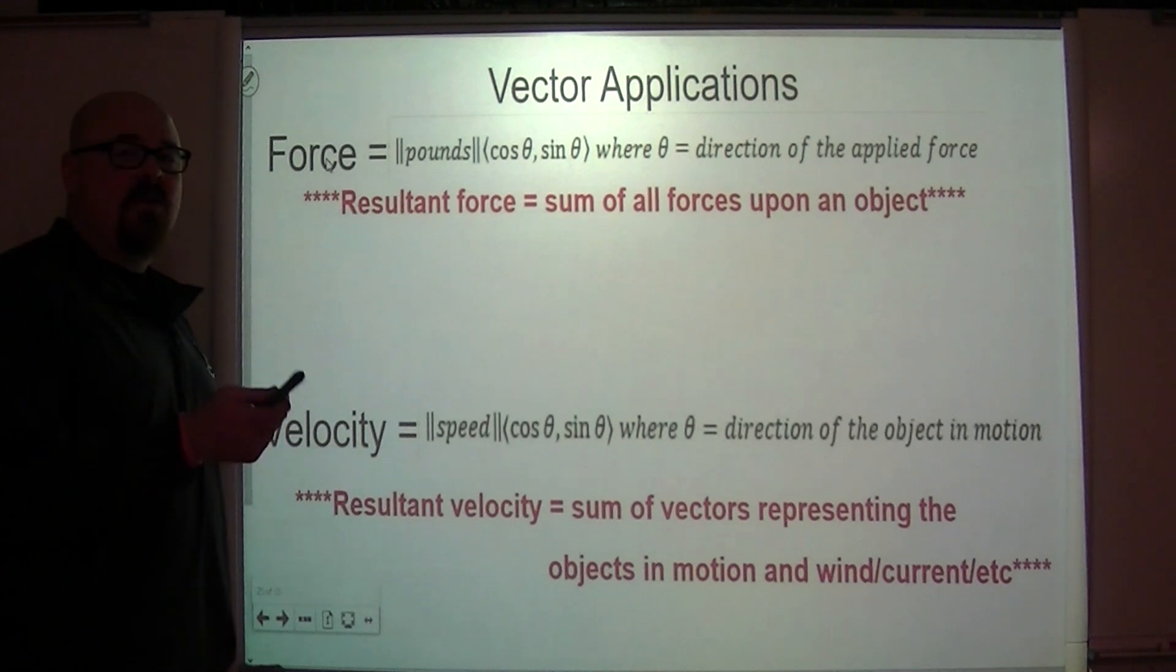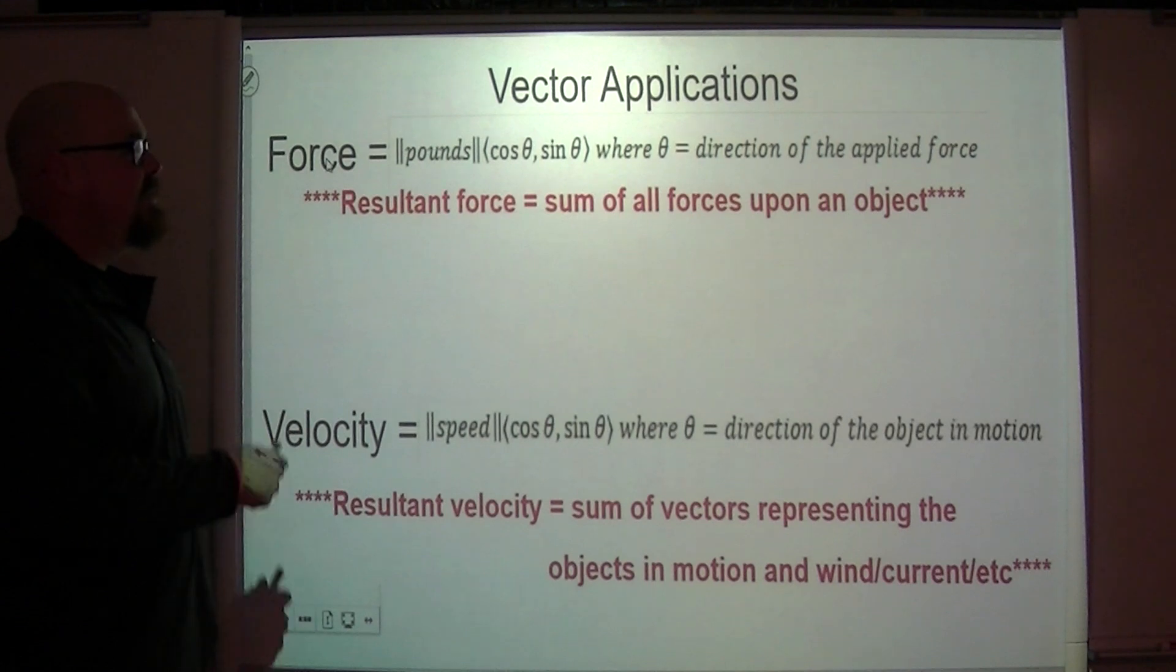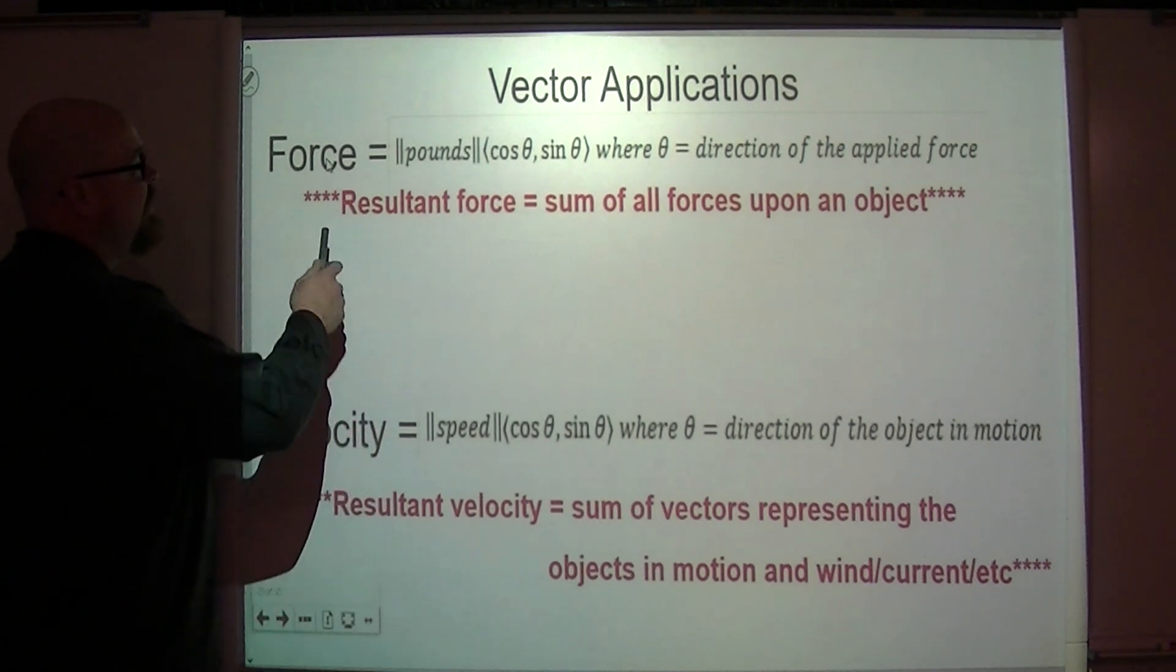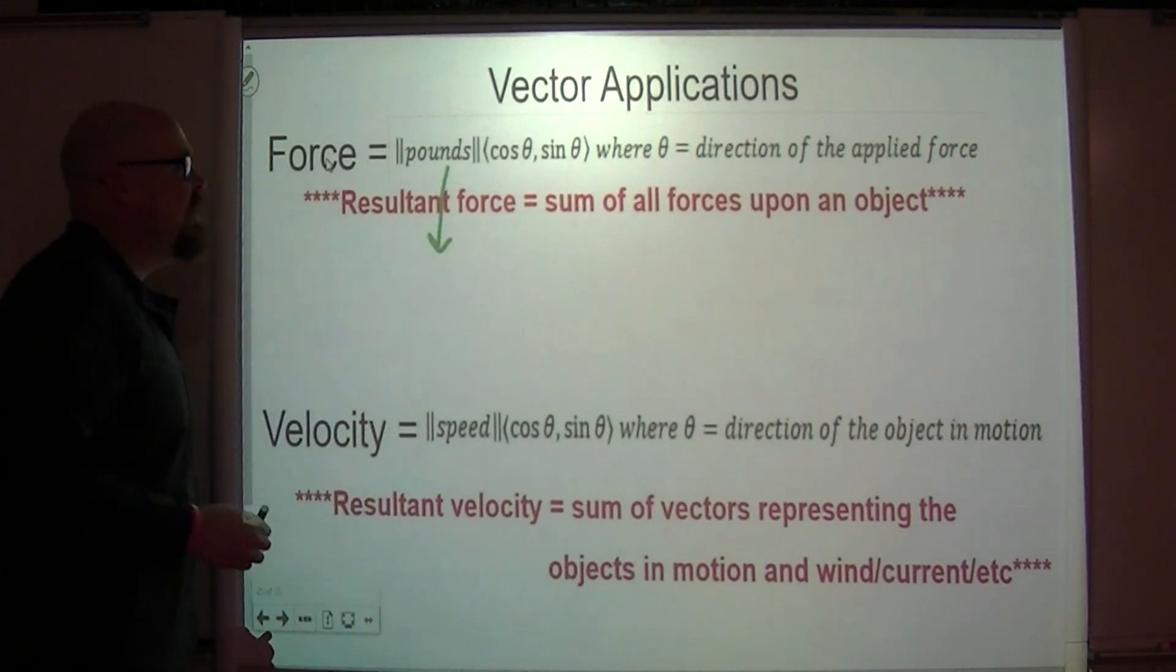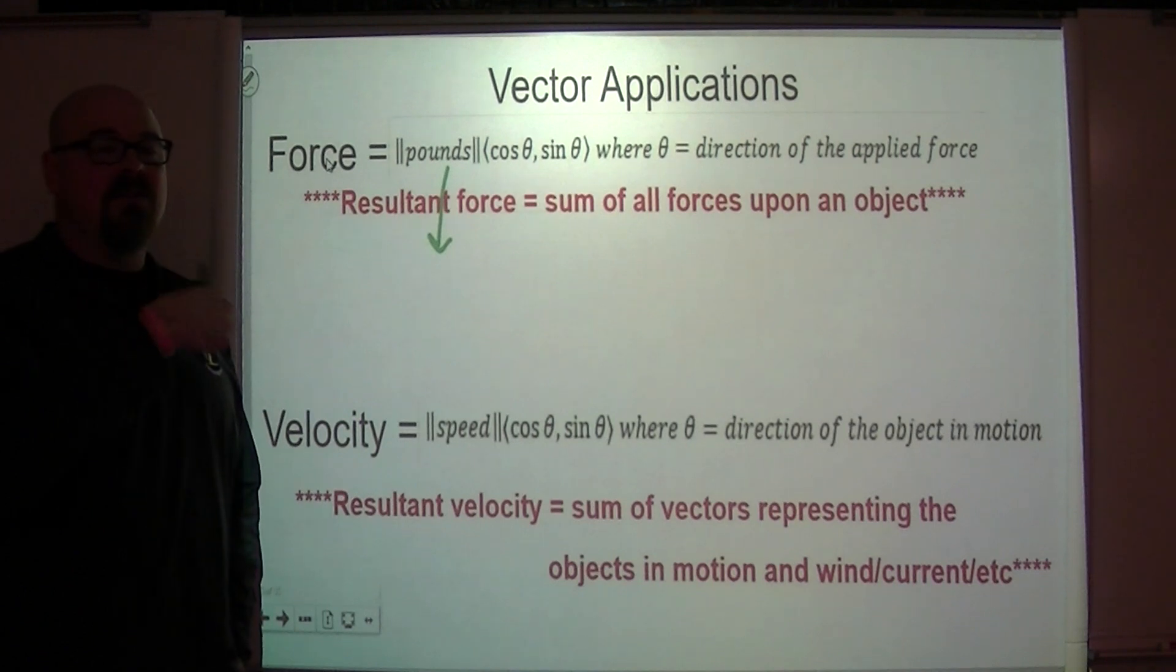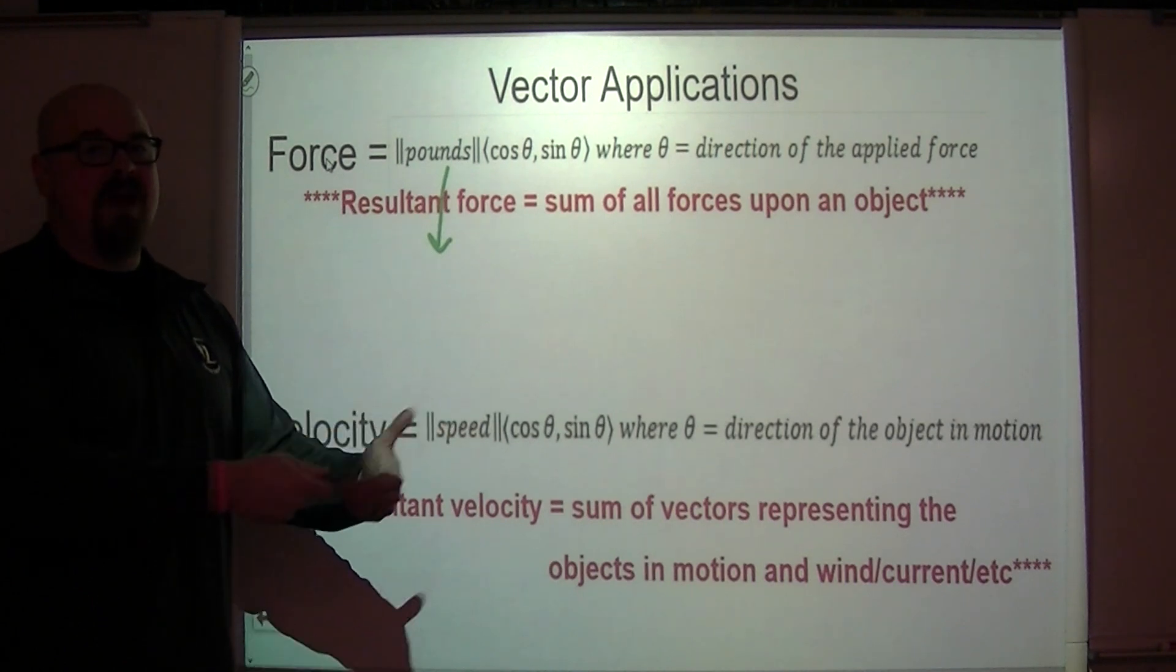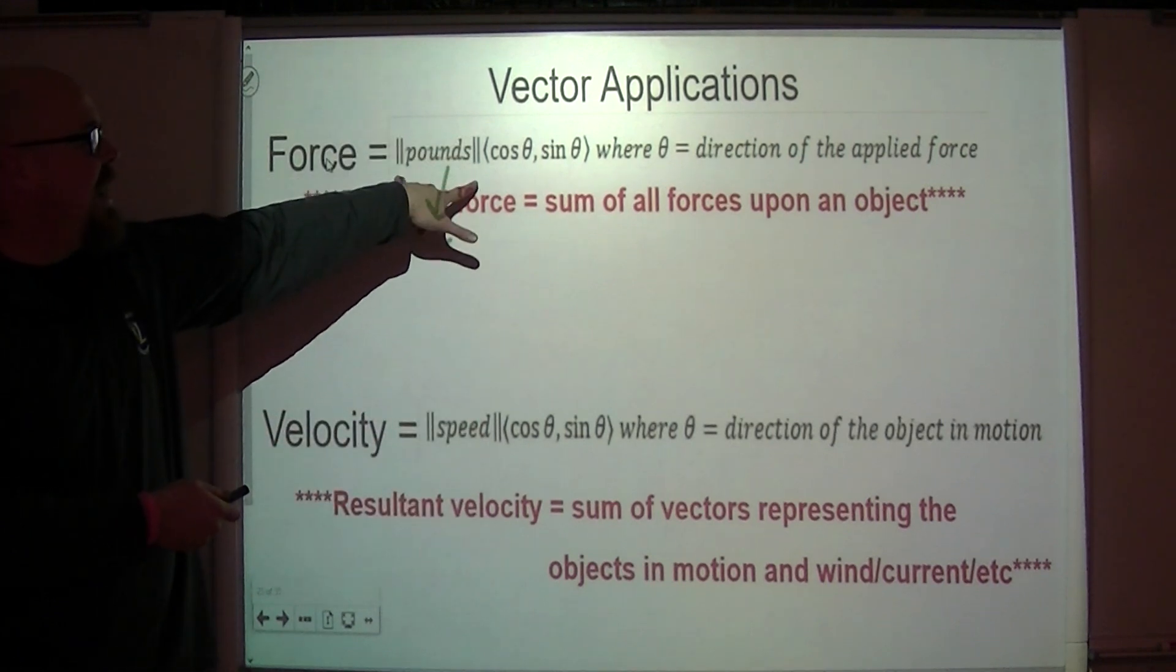Now, one of the last ways that we expressed vectors was in this, sometimes it's called trig form. In this case, we're just calling it the component form, but we're using magnitude and we're using the direction angle to do that. Specifically, when we're talking about force, you'll see the way that this is written. Forces are expressed for us in pre-calculus in terms of pounds, a certain pound of force. So you can pull on a rope with a certain amount of force that's measured in pounds. So that's why this is inside the magnitude symbol.